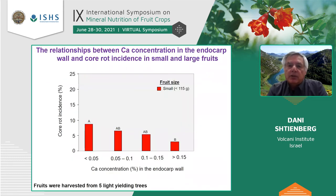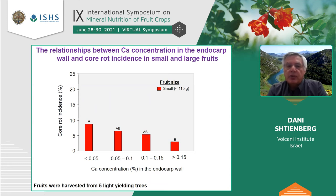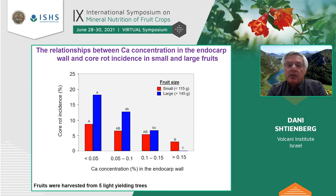To test that, we divided fruits into two groups: small fruits less than 150 grams and large fruits. In small fruits, we saw the relationship that the higher the calcium concentration, the lower the core rot incidence. In large fruits, we see exactly the same relationship, but also that the probability of large fruits showing core rot is higher than small fruits — which fits what we expected.